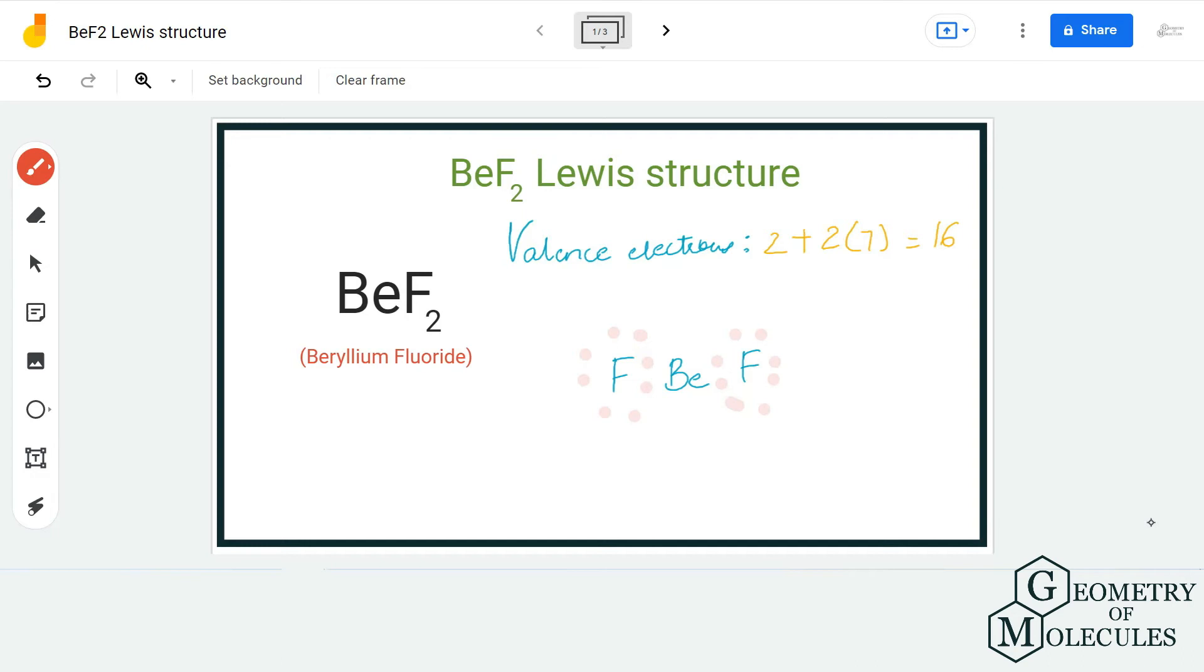Now, many people might question why beryllium doesn't have a complete octet. Why is the beryllium atom only having four valence electrons? If you try and complete its octet...